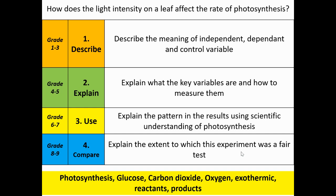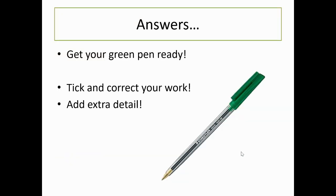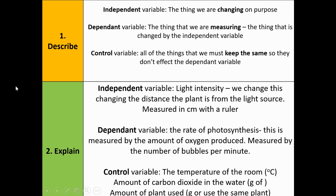Welcome back, Year 9. Please grab a green pen — or a different colour pen — so you can very obviously see the edits you've made to your work. Not only give yourself ticks when you get it right, but also add the extra detail you're missing. The independent variable is the thing that we change on purpose. The dependent variable is the thing that we are measuring — the thing changed by the independent variable. The control variables are all the things we must keep the same so they don't affect the dependent variable.